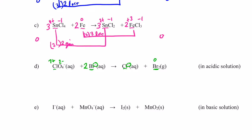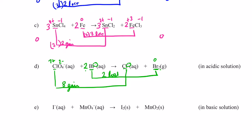Now let's balance electrons gained with lost. Chlorine goes from positive seven to negative one — to do that, eight electrons have to be gained. Bromine went from negative one to zero, so each bromine lost one electron. But there are two bromines, so we have two electrons lost total. To balance that, we'll quadruple the number of bromine species — putting a four in front of Br2 and changing the two to an eight in front of Br negative. So now I have eight electrons lost and eight electrons gained.